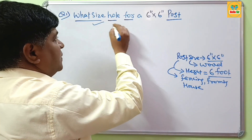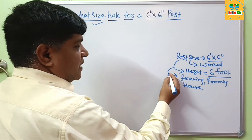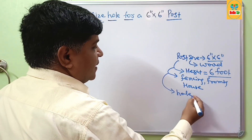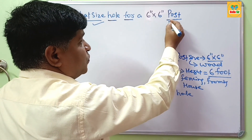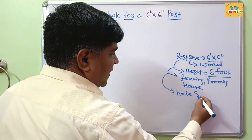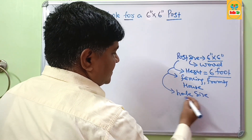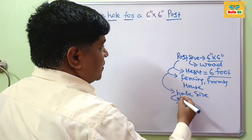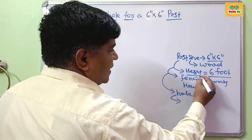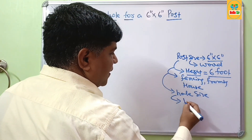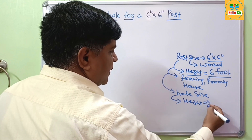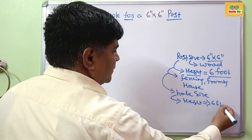You have to find out the hole size. The hole is required for setting of this post and is filled with concrete. The hole size will depend on mainly two factors: the height of the post above the ground, which is 6 feet, and the size of your post.